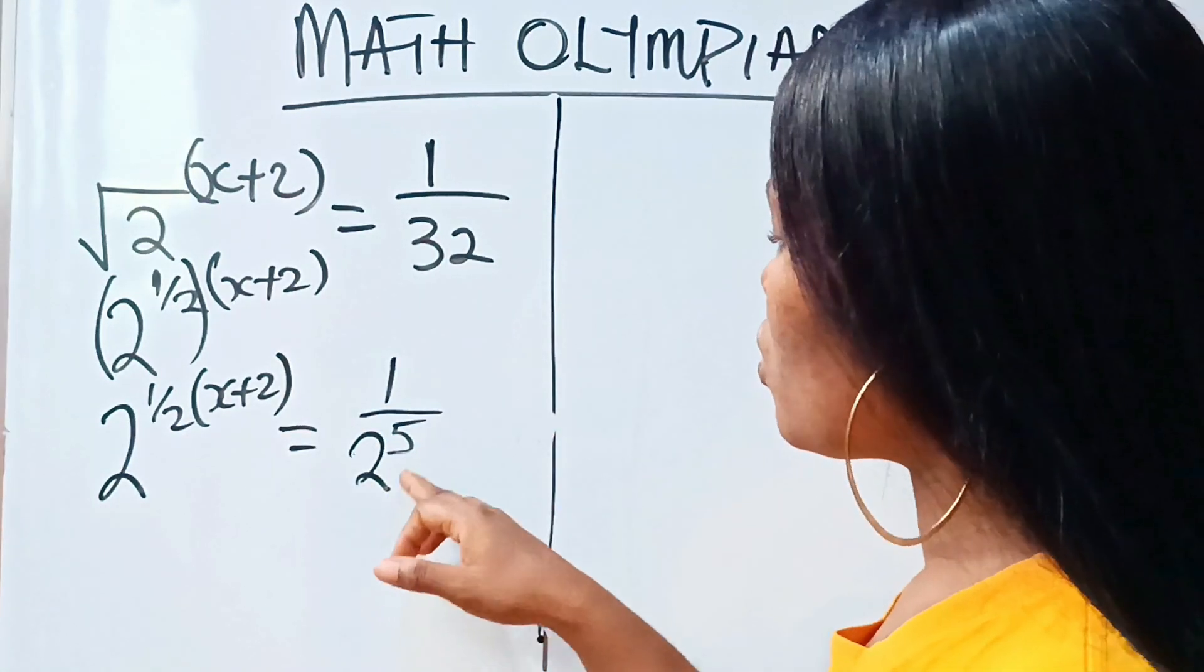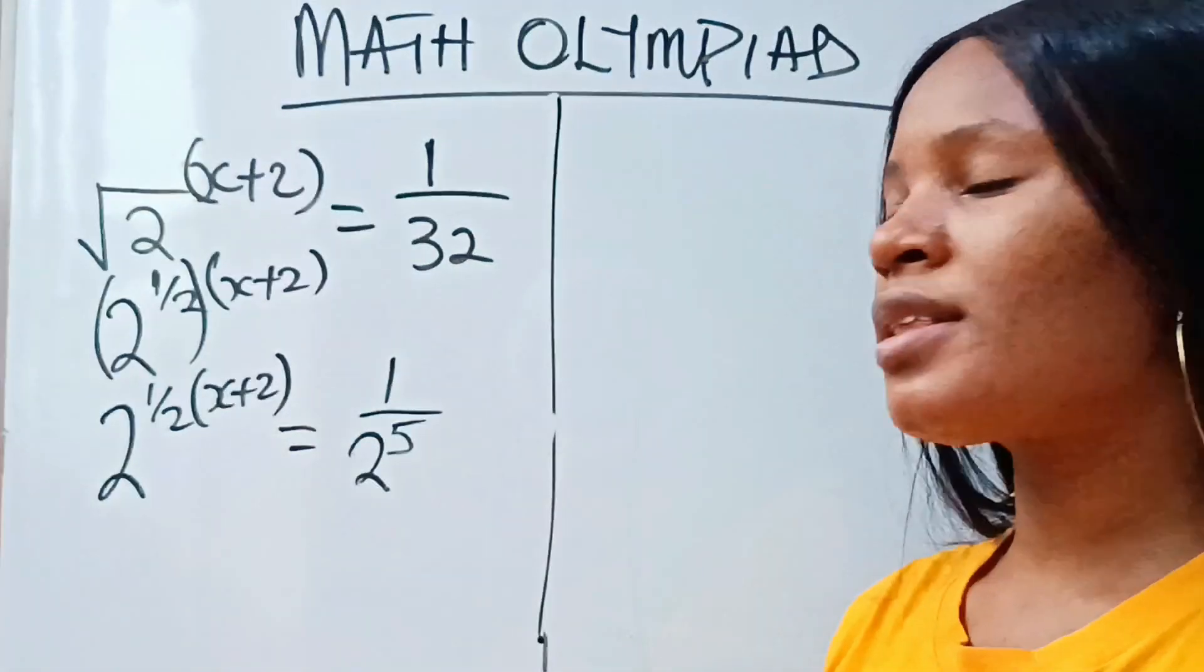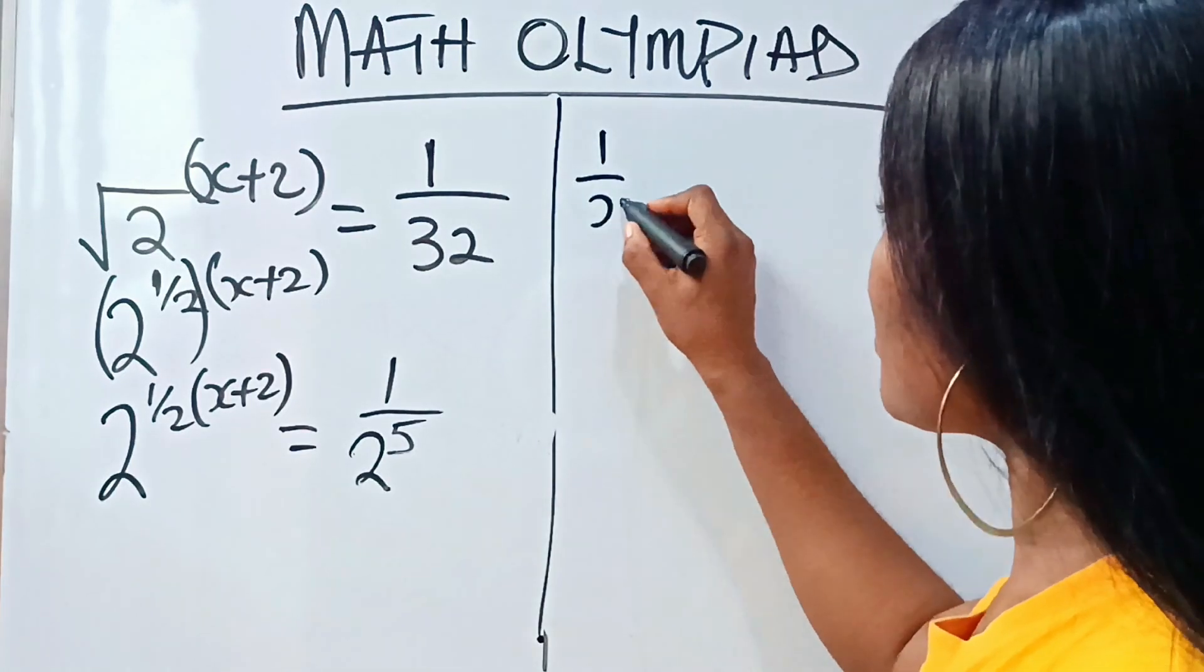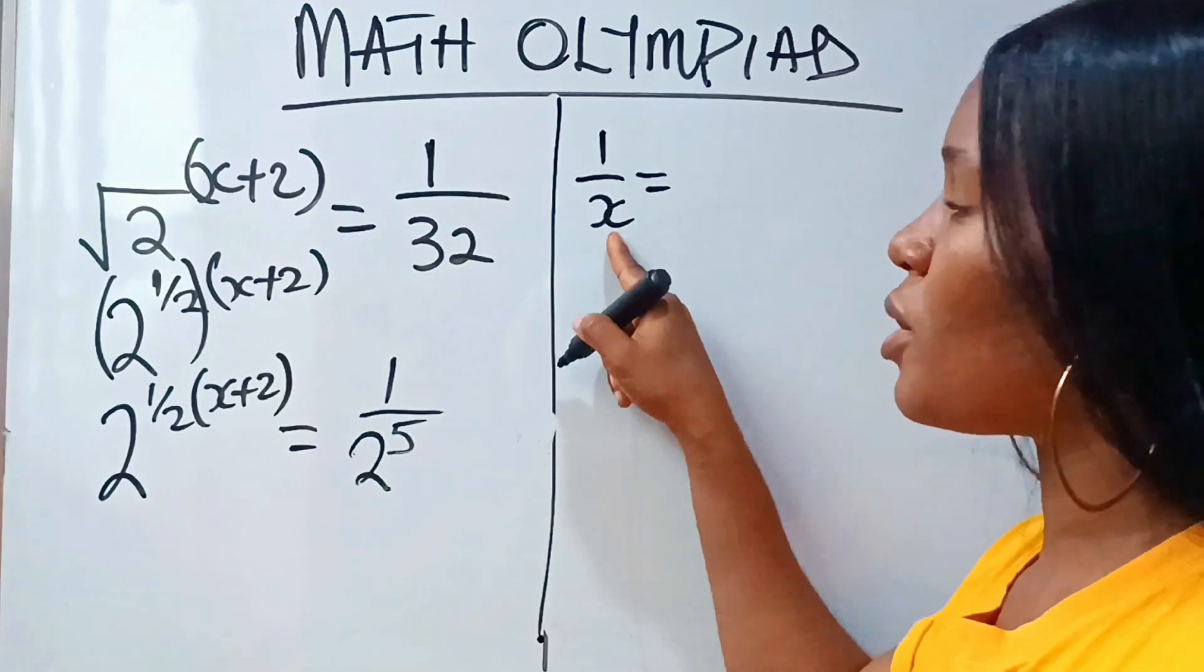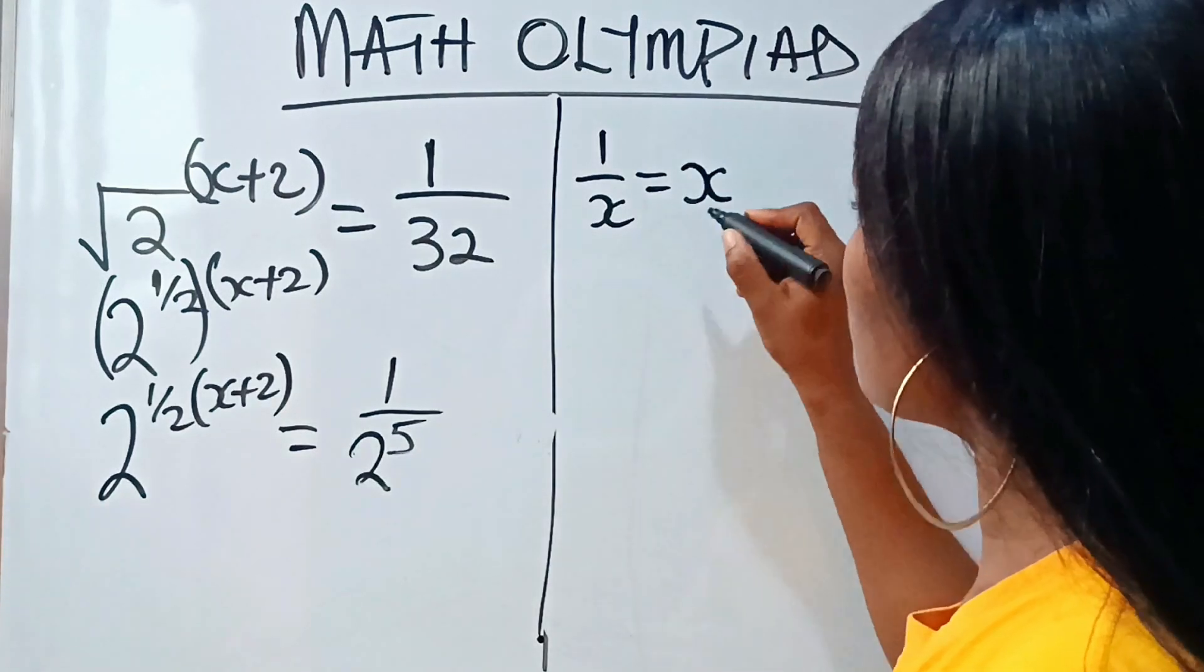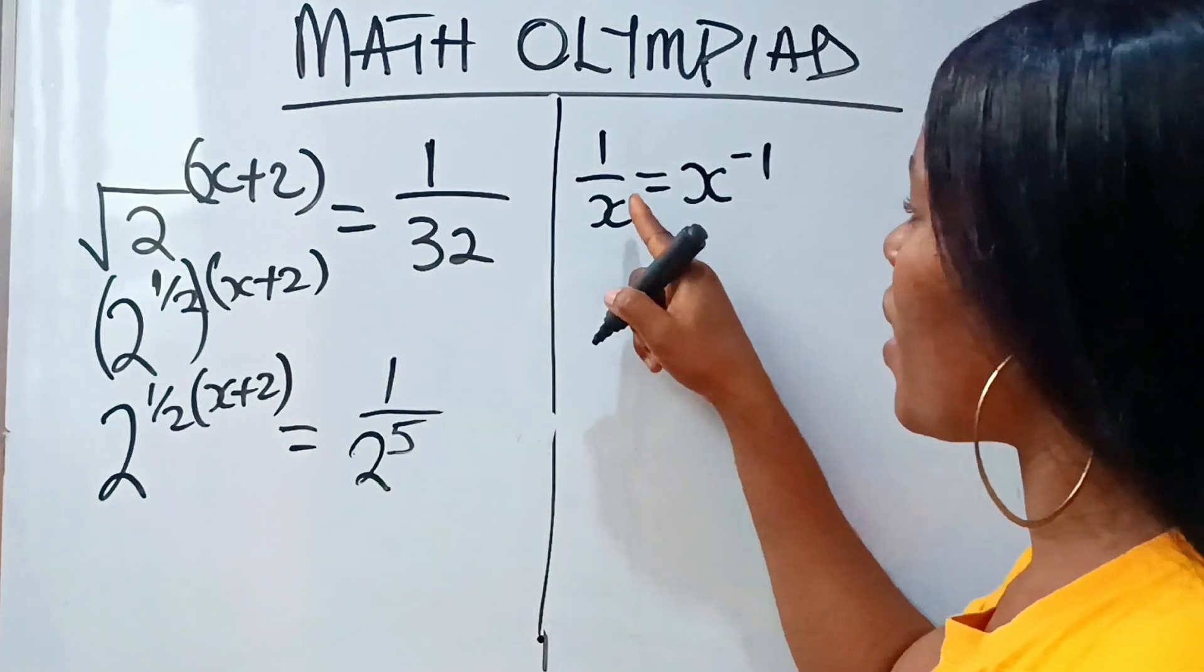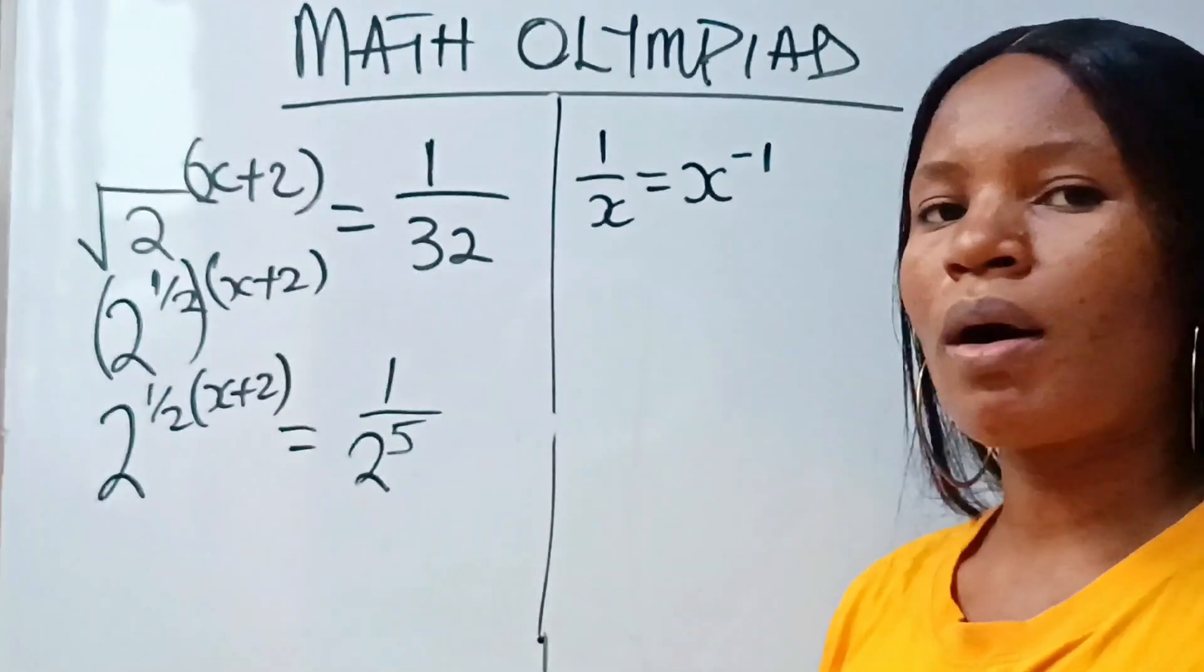So this is 1 over 2 to the power of 5. If I want to bring this 2 to the power of 5 up, indices says that 1 over x, if I want to remove this 1 over, I'm going to introduce negative sign to the power of my denominator. So that means it's going to be x to the power of minus 1. So I will just introduce negative sign to the power.